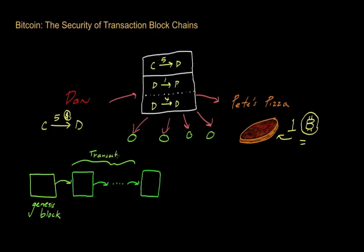And this transaction blockchain contains the history of every single transaction that's ever occurred within the Bitcoin system from the beginning of time — from the time of the first block, which is known in Bitcoin as the Genesis block.